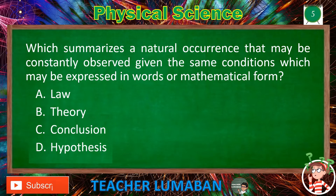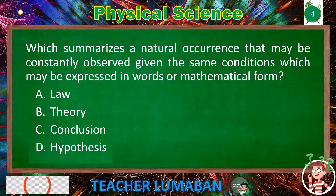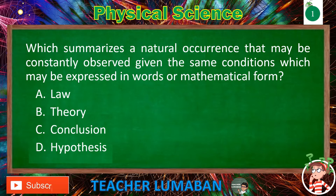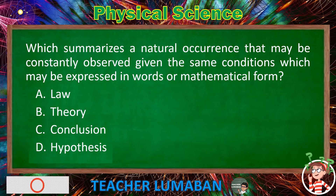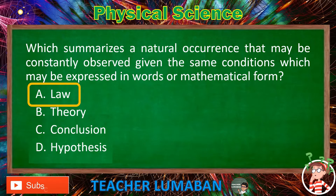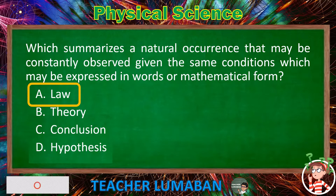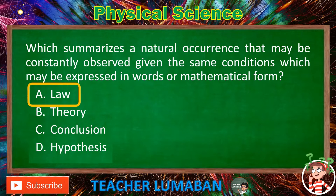The correct answer is letter A, Law. The law summarizes a natural occurrence that may be constantly observed given the same conditions, which may be expressed in words or mathematical form.